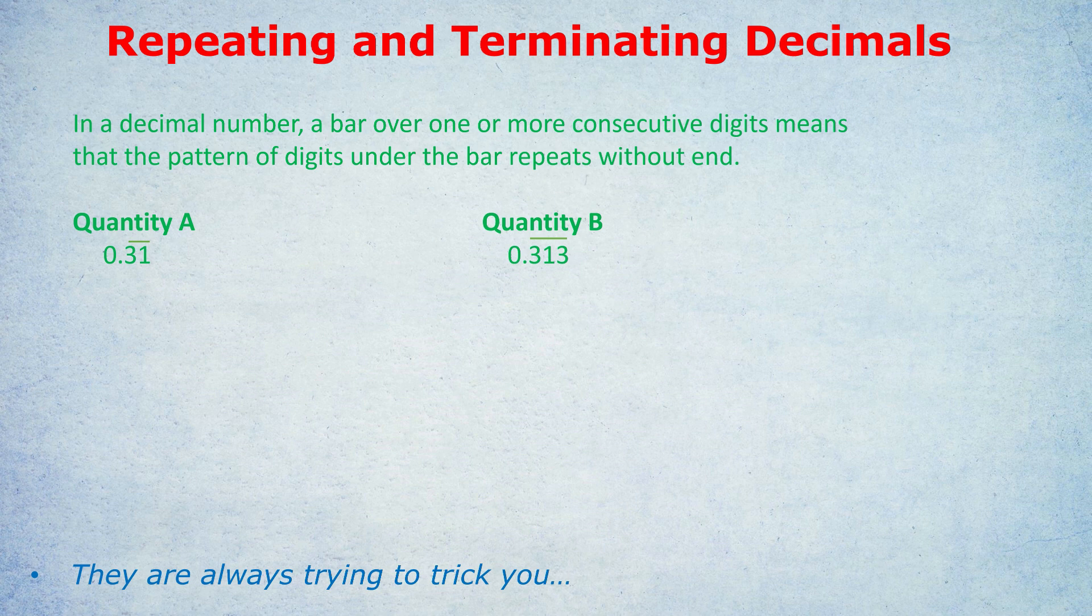But how would they actually ask a question, and what would we do? Let's take this question we have here. It's a GRE quantity comparison, and of course, repeating and terminating decimals can come up in the GRE and the GMAT quite commonly. In a decimal number, a bar over one or more consecutive digits means that the pattern of digits under the bar repeats without end. What's bigger, 0.31 with a bar over the 31 or 0.313 with a bar over the 313? Many students get tricked by this kind of question and think both quantities are equal. Because they think, aren't they both saying the same thing, like 31313131? So what's the difference?